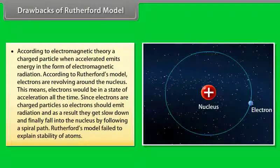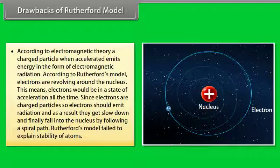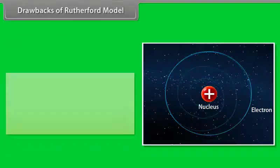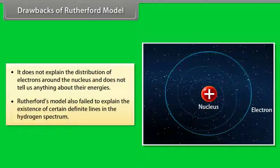Drawbacks of Rutherford's model: According to electromagnetic theory, a charged particle when accelerated emits energy as electromagnetic radiation. Since electrons revolve around the nucleus, they are always accelerating, so they should emit radiation, slow down, and spiral into the nucleus. Thus Rutherford's model failed to explain the stability of atoms. It also does not explain the distribution of electrons around the nucleus or their energies, and failed to explain the existence of definite lines in the hydrogen spectrum.